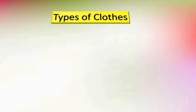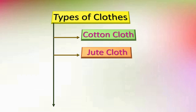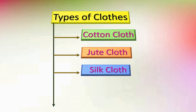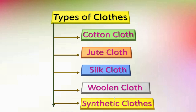Let us make a list of types of cloths. First: cotton cloth. Second: jute cloth. These two we got from the plant source. Number three: silk cloth. Number four: woolen cloth. Number five: synthetic cloths. These last three are made by using material sources other than plants.